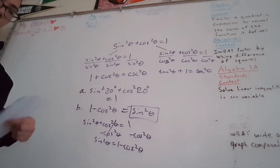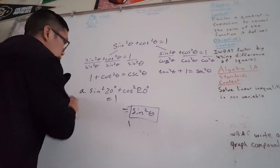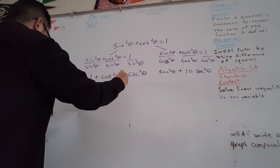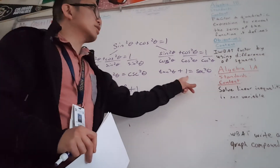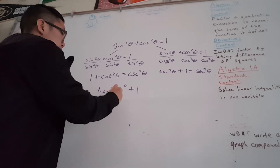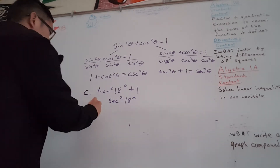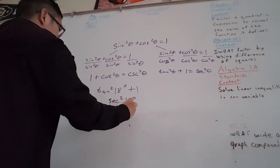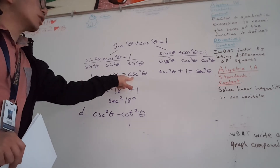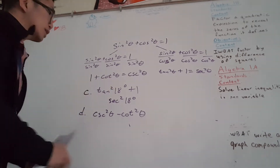Letter c: tangent squared 18 degrees plus 1. Looking at the identity, tangent squared plus 1 equals secant squared. So tangent squared of 18 plus 1 equals secant squared of 18 degrees. Letter d: cosecant squared minus cotangent squared. Using the Pythagorean identity relating cotangent and cosecant, subtracting cotangent squared from both sides gives cosecant squared minus cotangent squared equals 1.